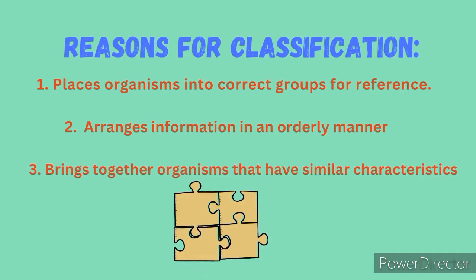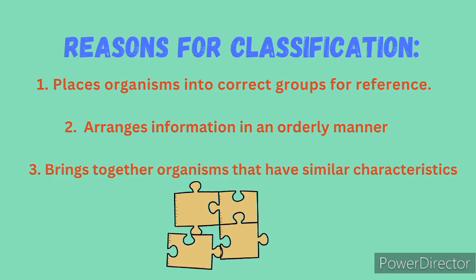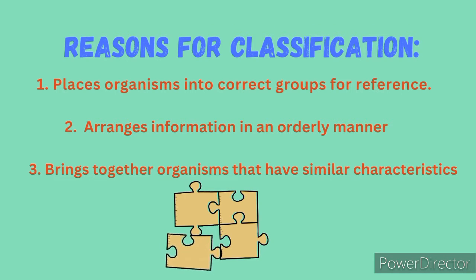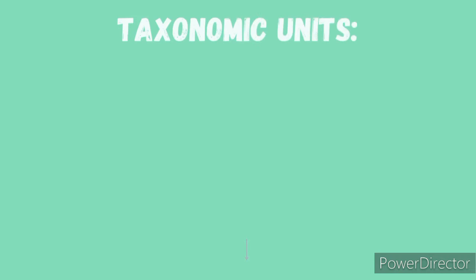So, you find that in one group you're going to have organisms that have similar features to one another, while those that have different features are going to belong in a different group. The groups that organisms are placed into during classification are known as taxa.